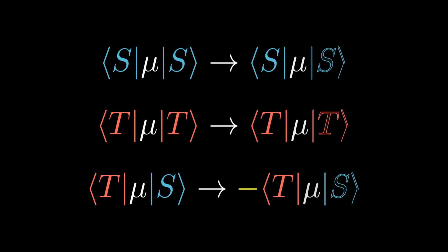Thus, the transition dipole moment remains the same for singlet-singlet and triplet-triplet transitions, but becomes negative when swapping the labels for a singlet-triplet transition.